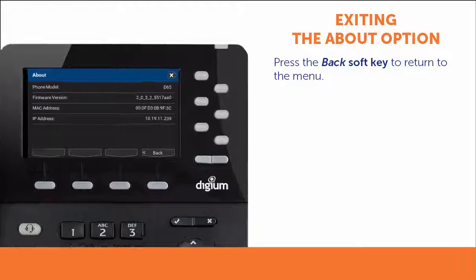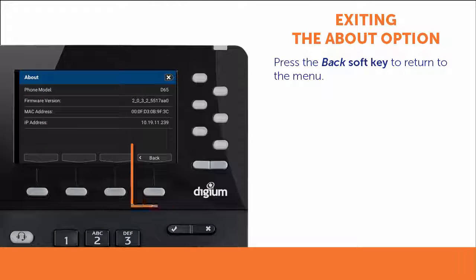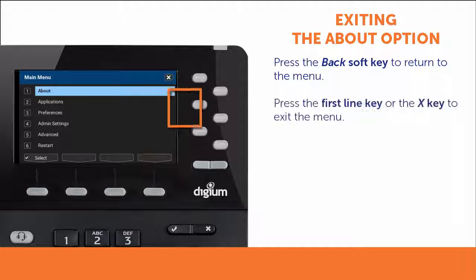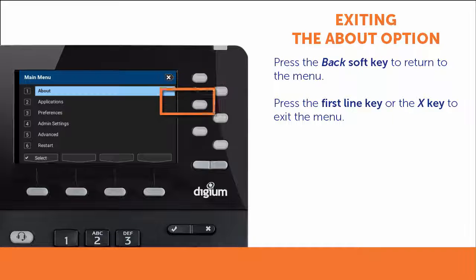To return to the Menu, press the Back Soft Key. To exit, press the First Line Key to the right of the X button in the top right corner of the screen, or the X key.